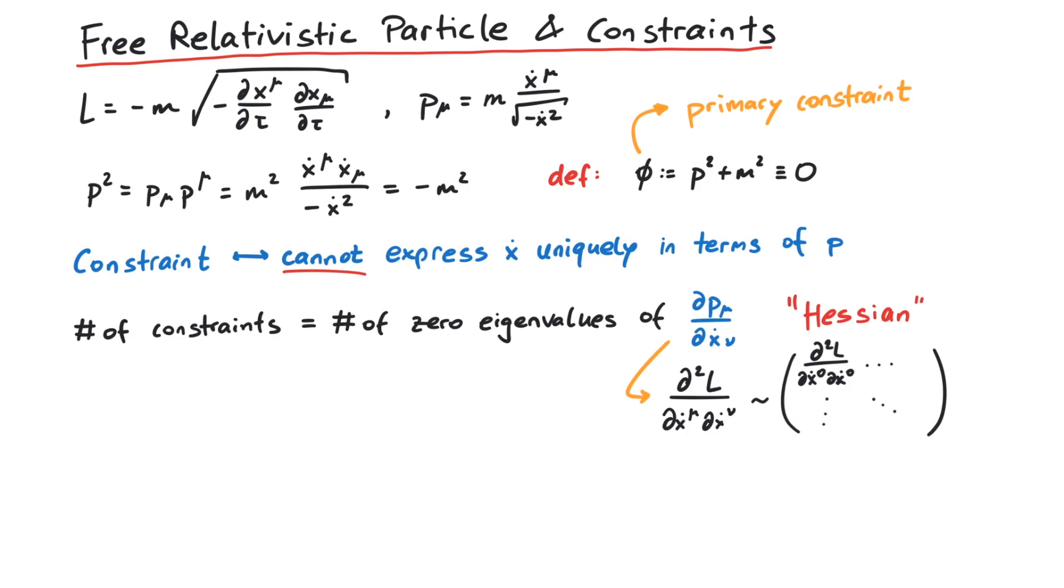Now what does this constraint mean? Systems that have constraints are called singular, and for a singular system, the dynamical evolution with respect to the parameter tau is determined by the Hamiltonian H, which is given by the sum of the canonical Hamiltonian plus all constraints multiplied with some parameter.